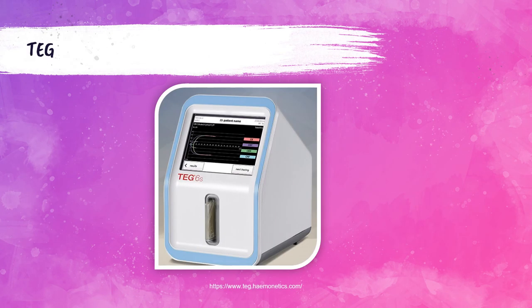The last coagulation analyzer is the thromboelastograph, or TEG. At the time this lecture was recorded, this was a fairly new analyzer. It measures the ability of the patient's whole blood to clot and is considered a comprehensive look at the overall clotting process. That concludes this lecture on hemostasis. Please give it a like and subscribe to the channel, and feel free to leave any questions in the comments.